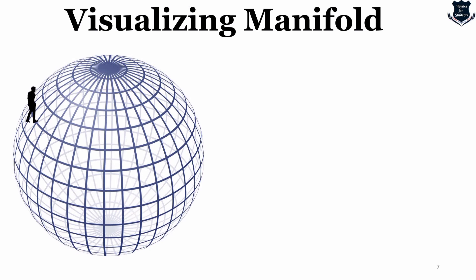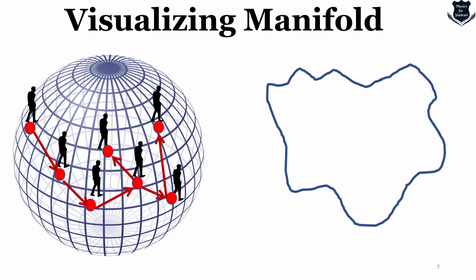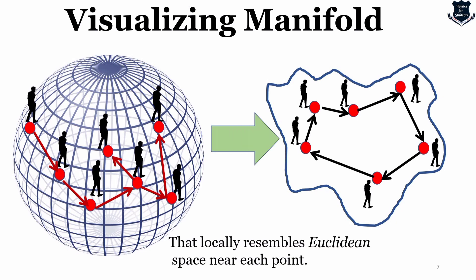Let us quickly look into what 'locally resembled' means. Here is a person walking on a sphere from point to point. If I map the same path onto a manifold and track the person's movement, what happens is that it locally resembles Euclidean space near each point. If I have moved out from the sphere and look at it, I can say it is a sphere — that is the global part. But when I plot those points on a local manifold, it locally resembles Euclidean space — that is the local part.